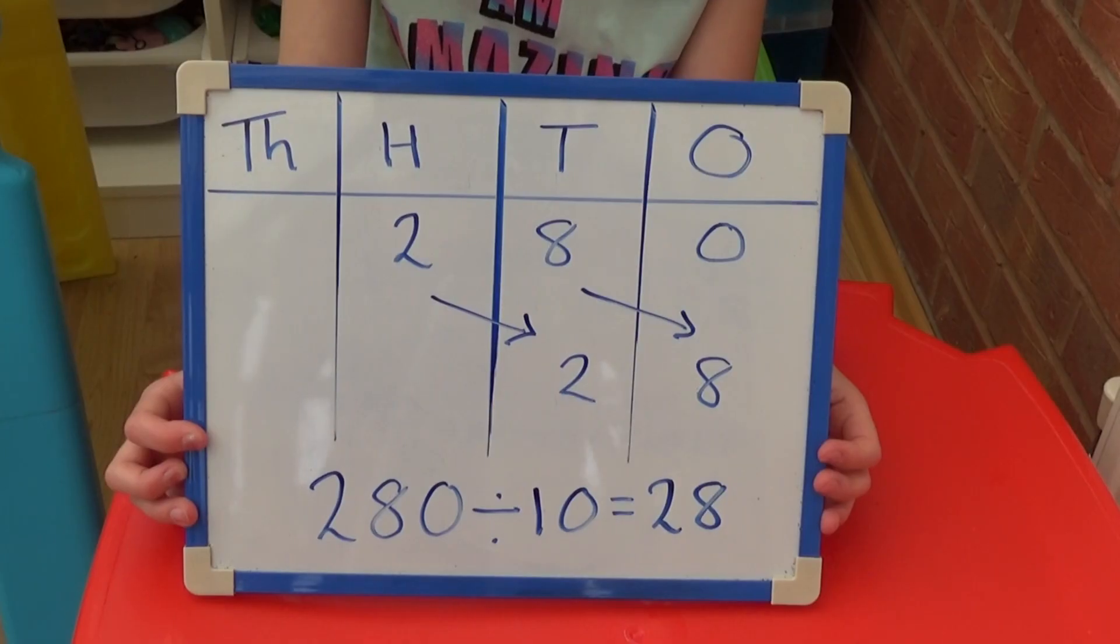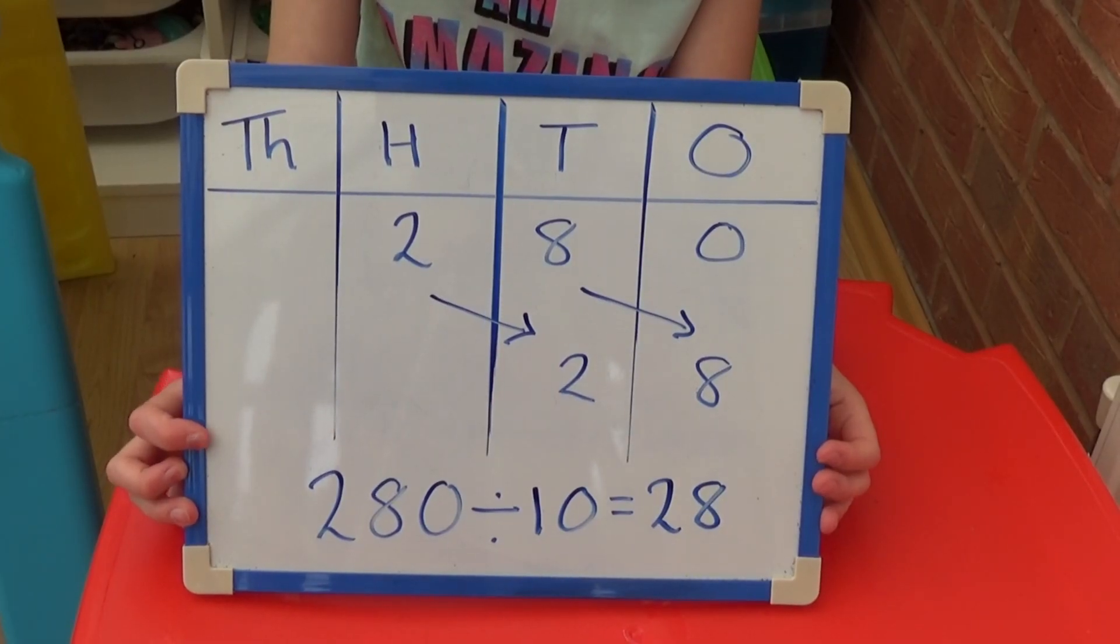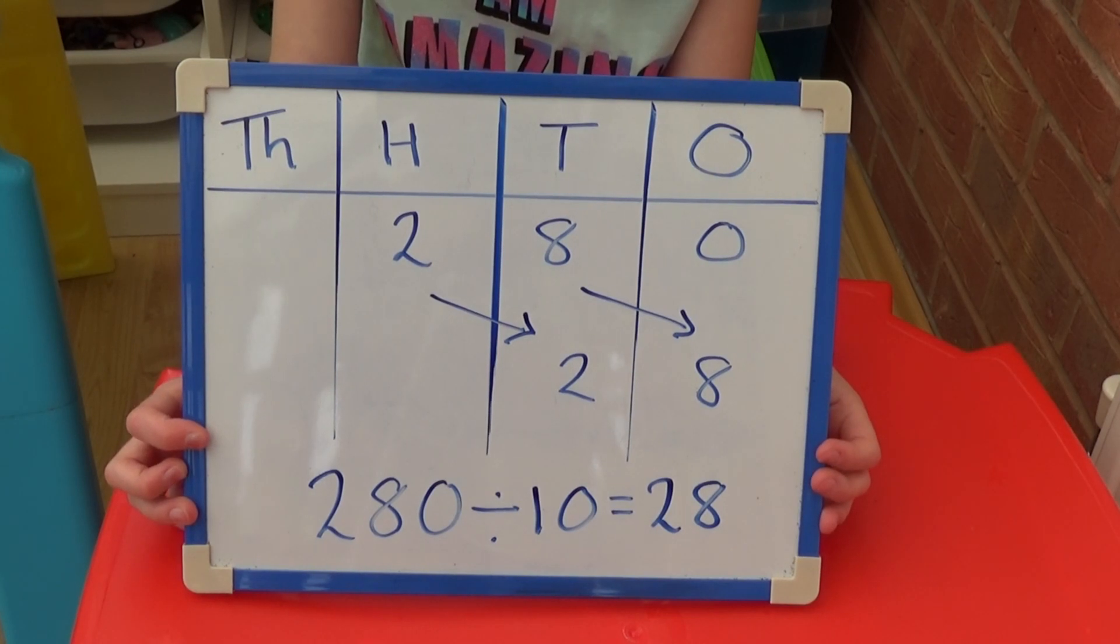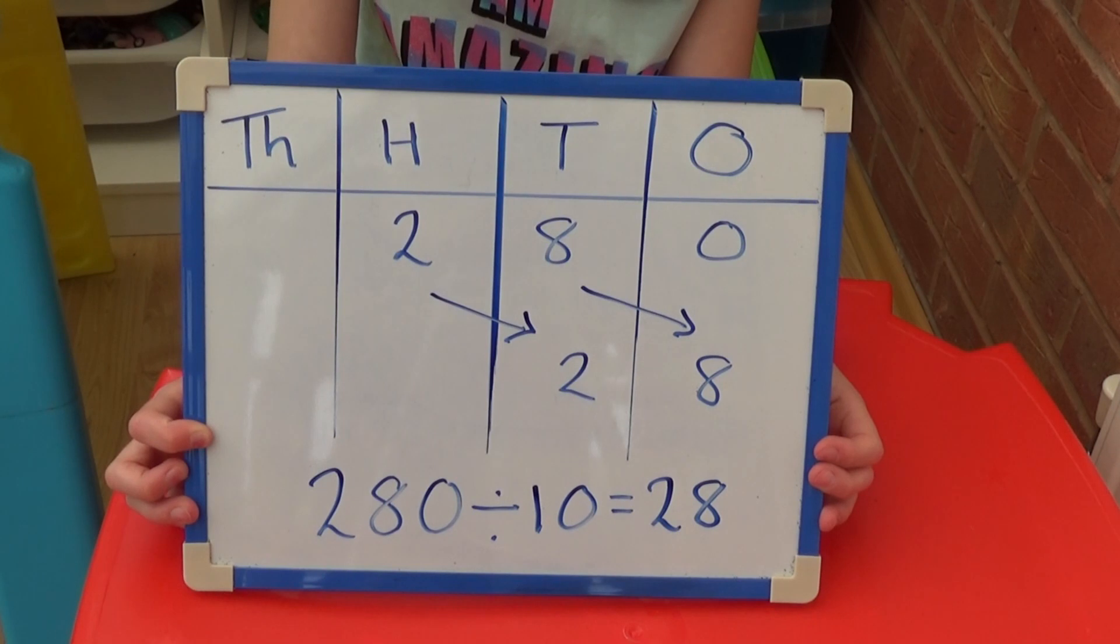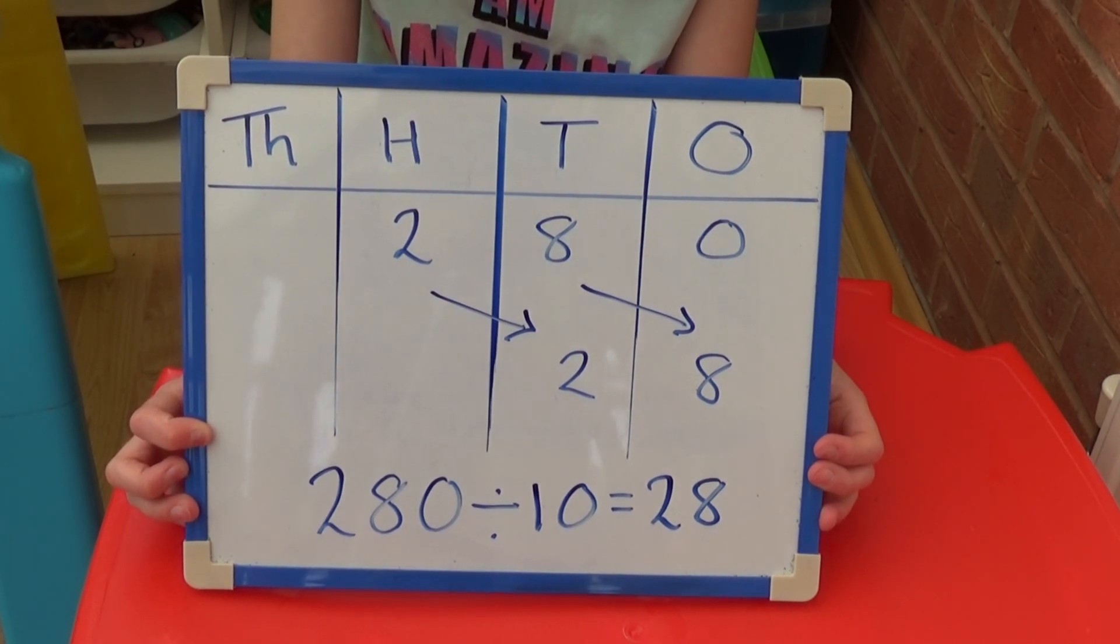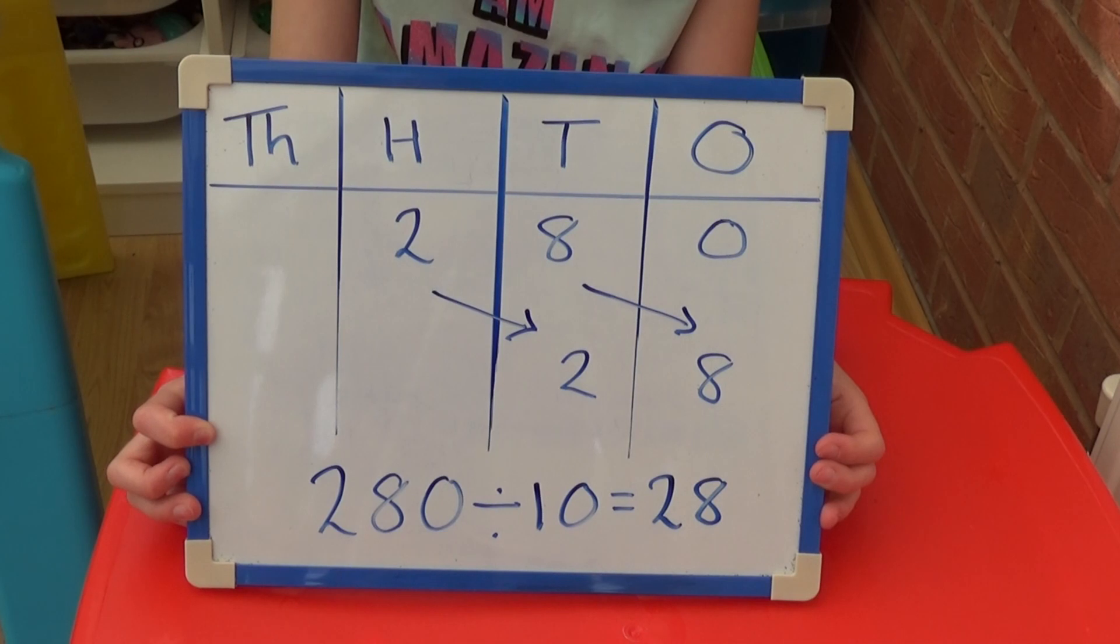For 280 divided by 10, each digit moves one column to the right, so 200 becomes two tens, and the 80 becomes eight ones. We no longer need the zero.